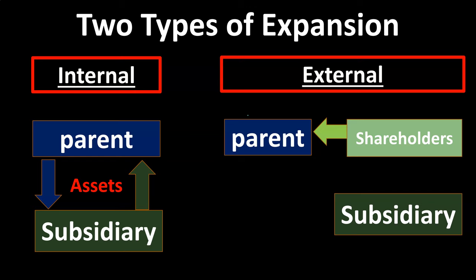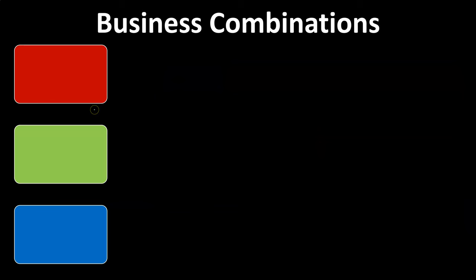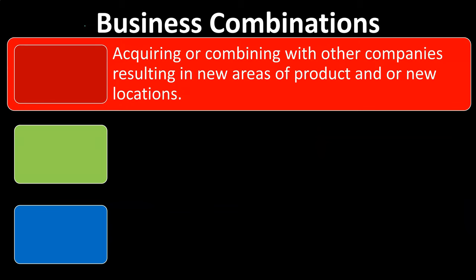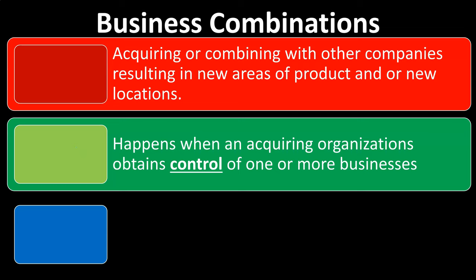The format and form of that combination can be various. It could result in a parent-subsidiary type of relationship, or it could result in one company basically consuming another and bringing them into the overarching parent company. The term 'business combinations' refers to this type of external expansion — acquiring or combining with other companies resulting in new areas of product or new locations. A business combination happens when an acquiring organization obtains control of one or more businesses.